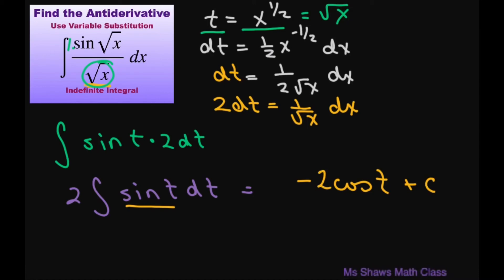And then we have to substitute back in our x. So our final answer is going to be negative two cosine of square root of x plus c. And that is your final answer.